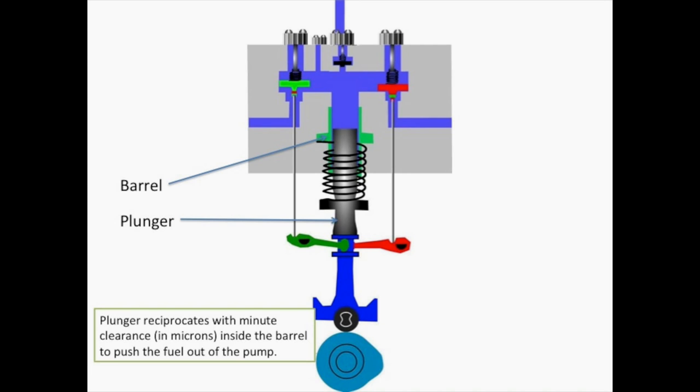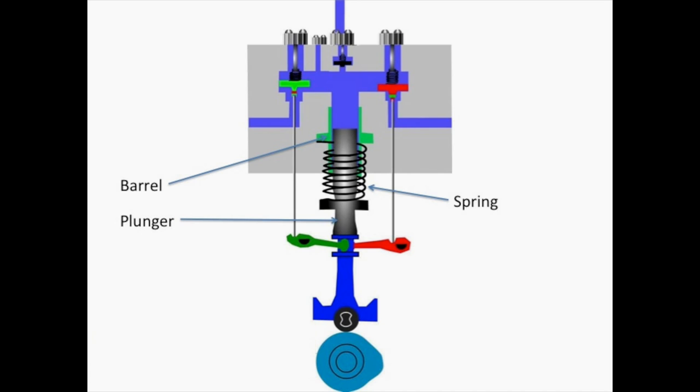A plunger reciprocates inside the barrel with minute clearance to push the fuel out of the pump. A spring in the plunger follower assembly brings back the roller into the base circle of the cam once the lift is over.